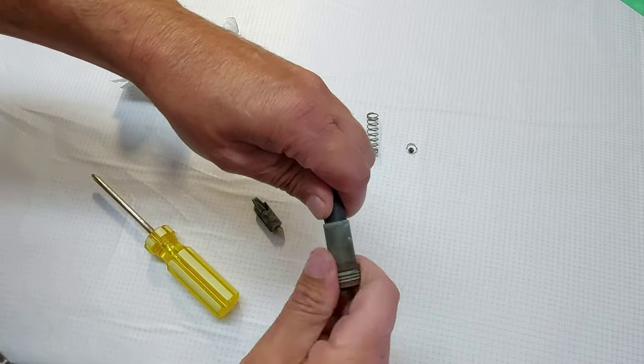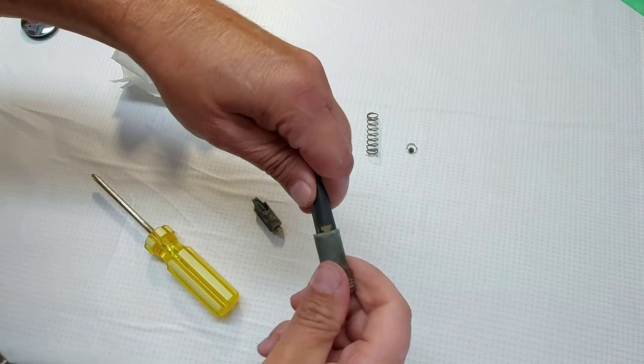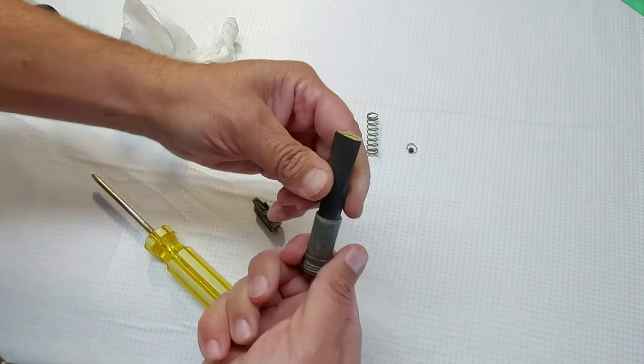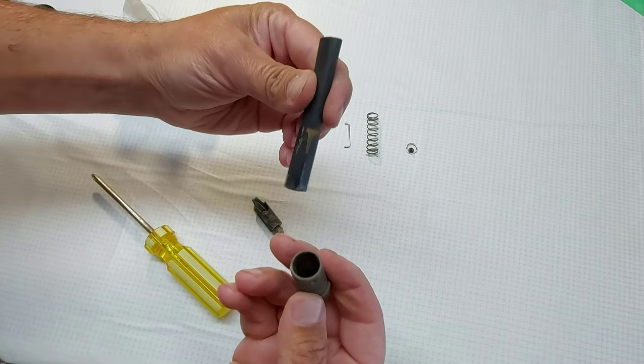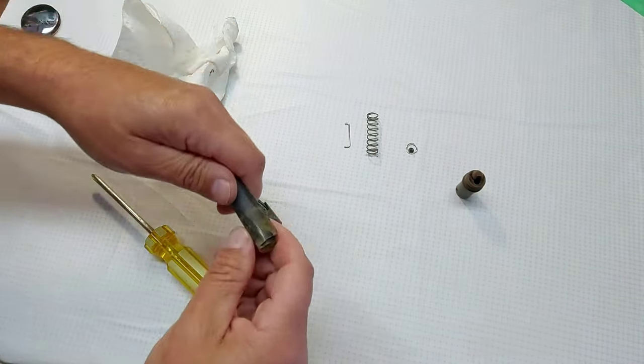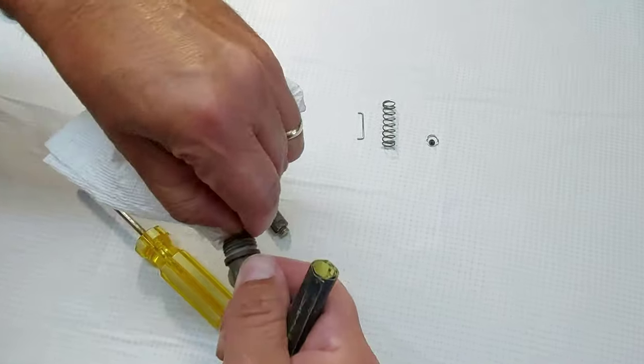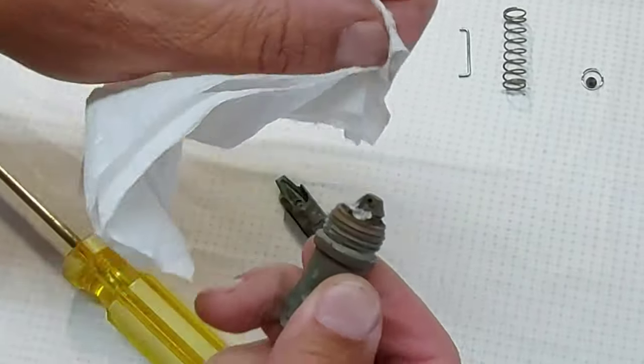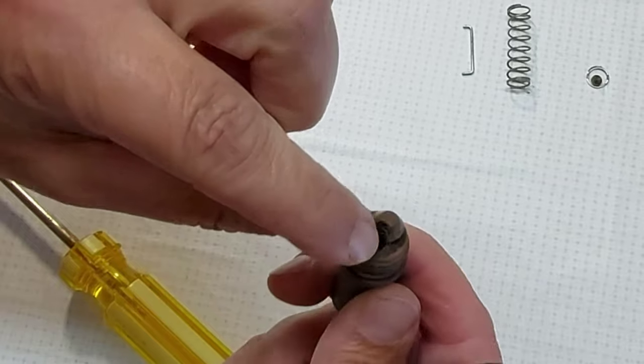And it'll sand off any loose stuff that's in there. See that? So we're good there. Also at this end, you'll see some goop in here too. We just want to make sure that gets all cleaned up. Right in here.